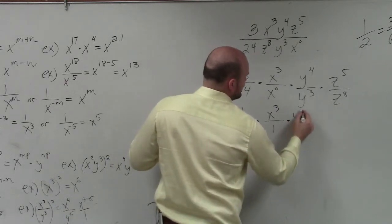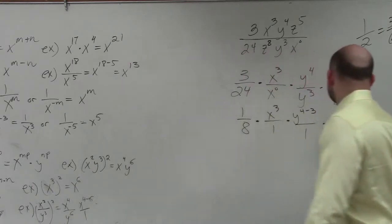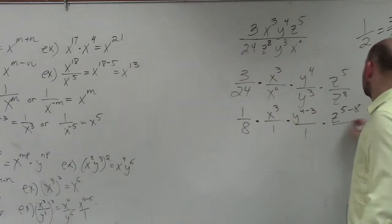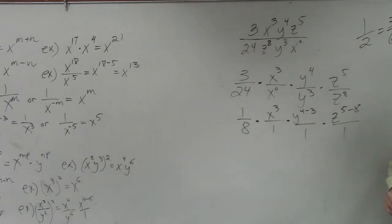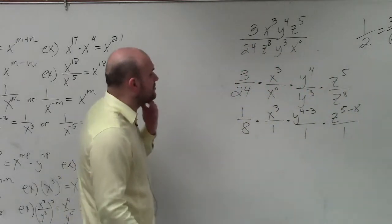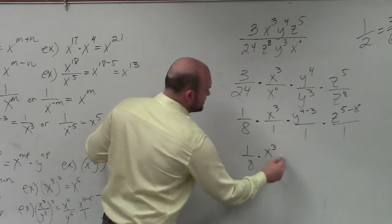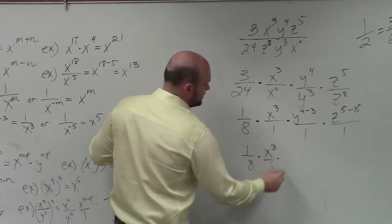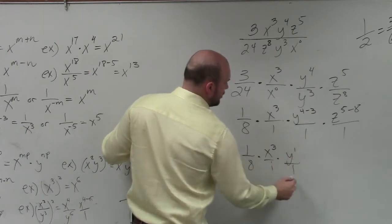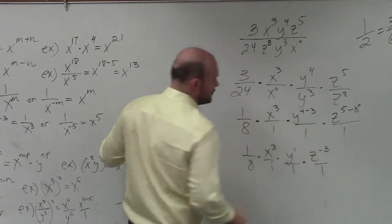Here, I have y to the 4th minus 3 over 1, and then times z to the 5th minus 8 over 1. All right? And I'll explain why we're doing this in the numerator and denominator. Actually, I will do a little bit of instruction for that. So therefore, I have 1 eighth times x cubed times, that's over 1, times y to the 1st over 1, times z to the negative 3rd over 1.